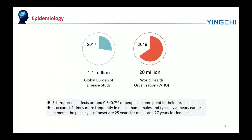In 2017, the Global Burden of Disease Study estimated there were 1.1 million new cases. And in 2019, the WHO reported a total of 20 million cases globally. Schizophrenia affects about 0.7% of people at some point in their life. It occurs 1.4 times more frequently in males than females and typically appears earlier in men. The peak ages of onset are 25 years old for males and 27 years old for females.